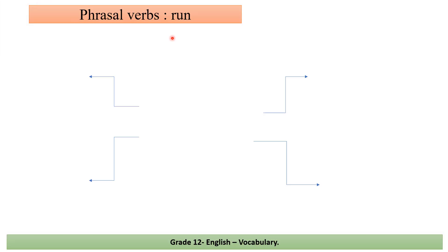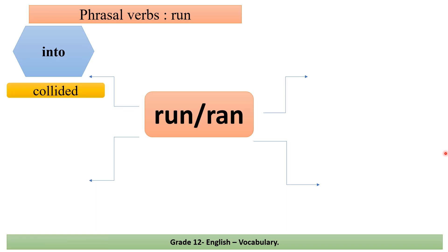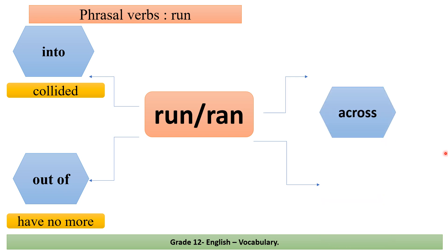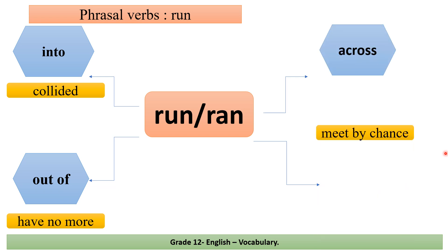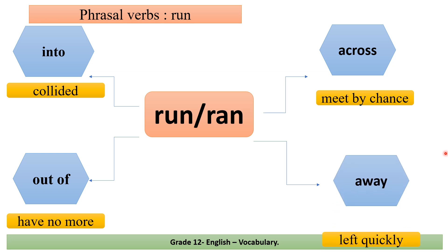Phrasal verbs with 'run.' Number one — 'run into': he ran into something, meaning he collided. Number two — 'run out of': he runs out of something, meaning he has no more. Number three — 'run across': he runs across someone, meaning to meet by chance. Number four — 'run away': he ran away, meaning to leave quickly.